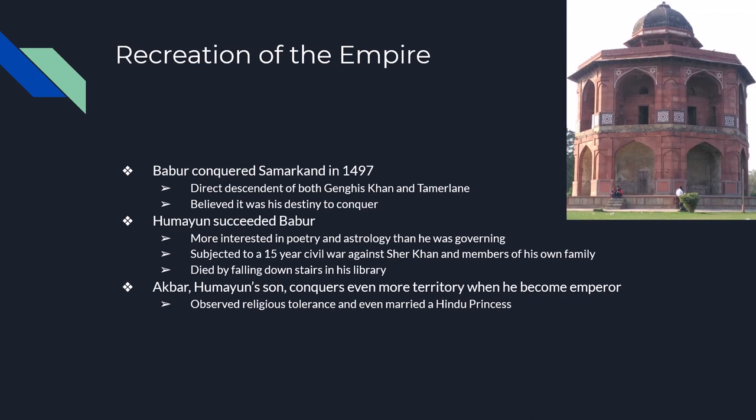Unfortunately for Humayun, in the year 1556, he was on top of his library reading books up on the roof. When he decided to come back down the stairs, he tripped and fell down the staircase while carrying an armload of books, and he unfortunately died from the fall. Once Humayun passes away, his son Akbar takes over.